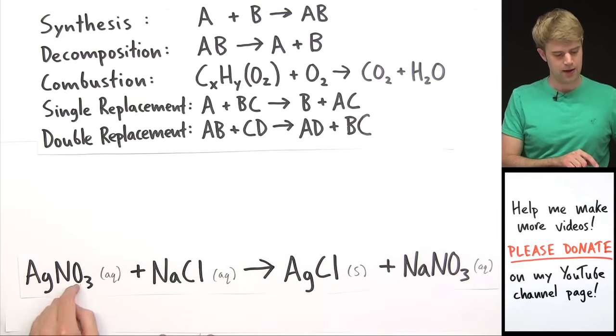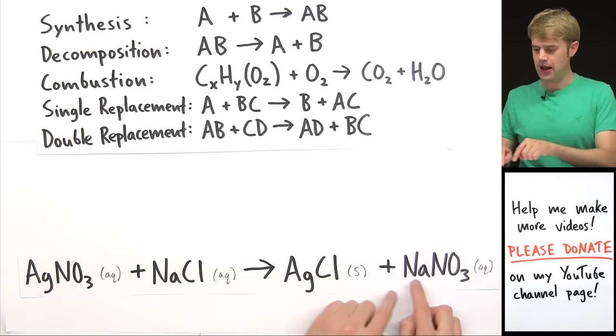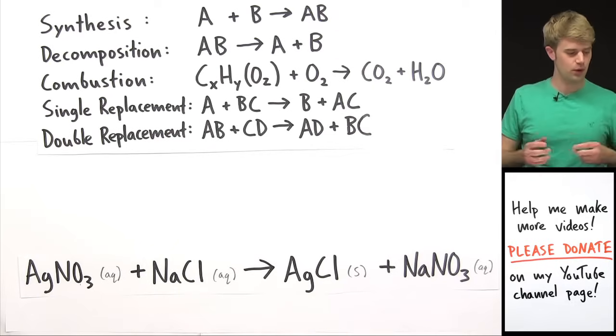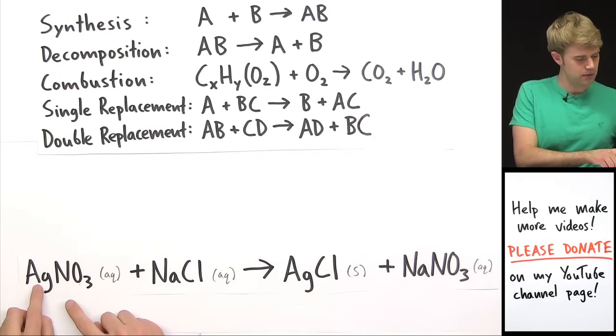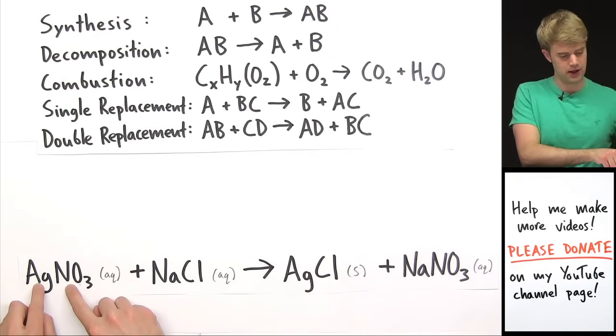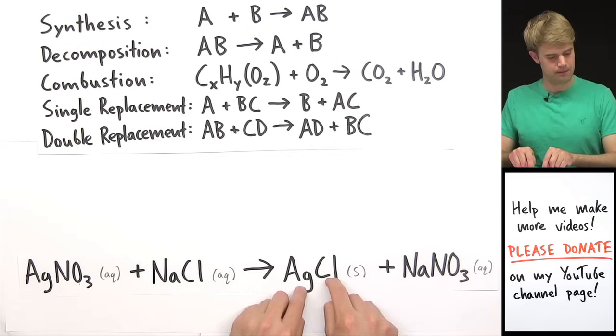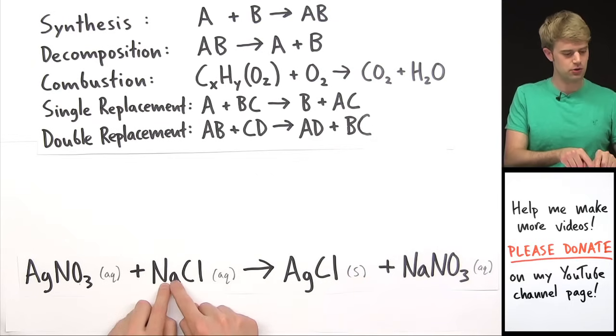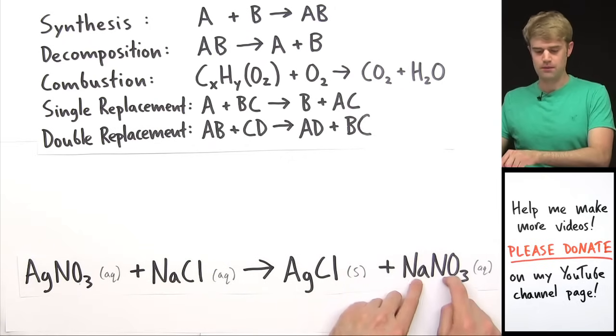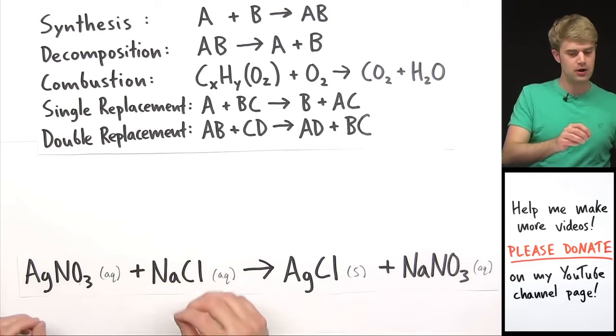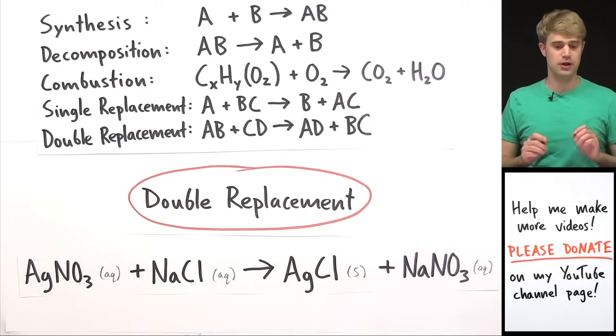Silver nitrate plus sodium chloride give us silver chloride and sodium nitrate. What's going on here? Well, we have two pairs that then switch their partners. Silver was initially paired up with nitrate and then silver ends up pairing up with chloride over here and sodium was initially paired up with chloride and then sodium ends and switches up here with nitrate. So this where we have two pairs switching partners is a really good example of a double replacement reaction.